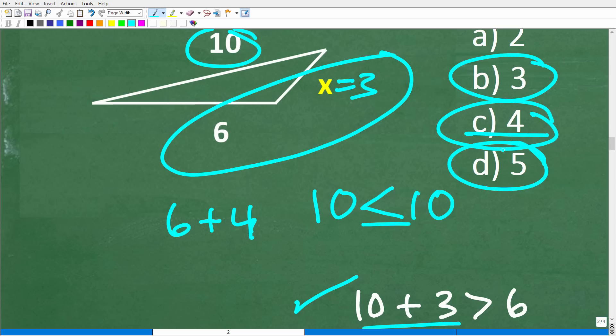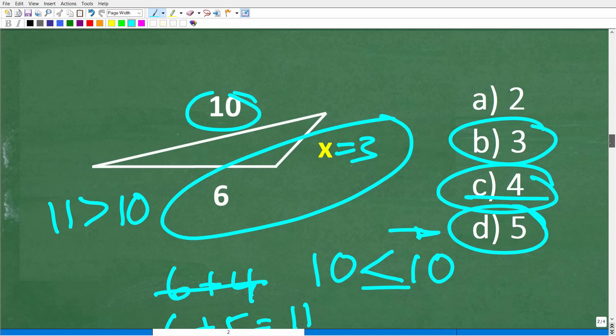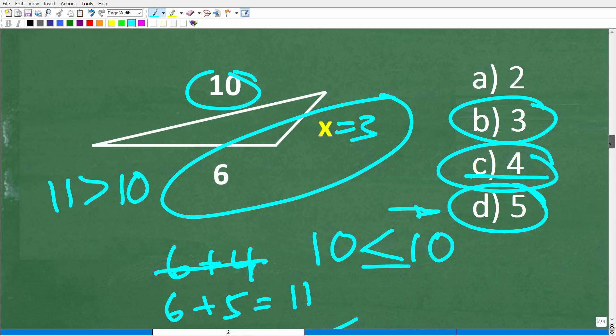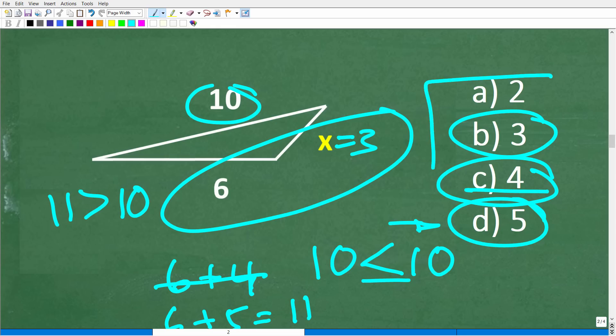The only one that would work is 5. So we have 6 plus 5, which of course is 11. So 11 is greater than 10. All right, so again, the way we solve this problem is by default. In other words, the only possible answer here that makes sense is D, which is 5. All these right here, these lengths cannot be triangles.